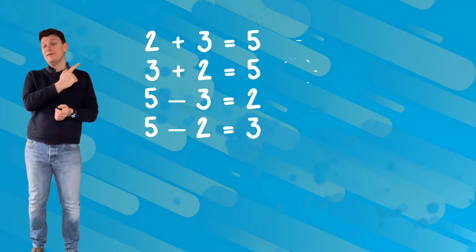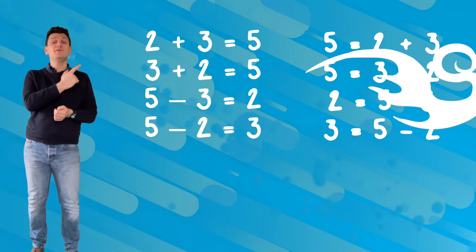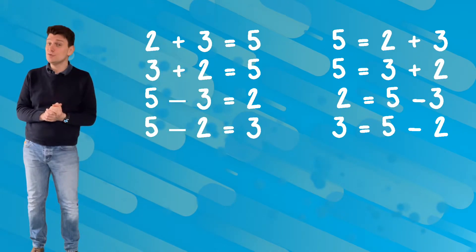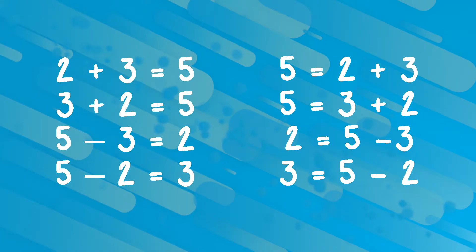For example, here is the fact family of two, three, and five involving addition and subtraction. As you can see, we have eight different ways to express the relationships between these three numbers.